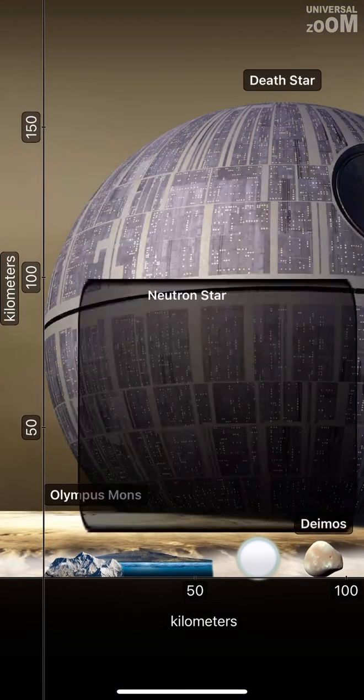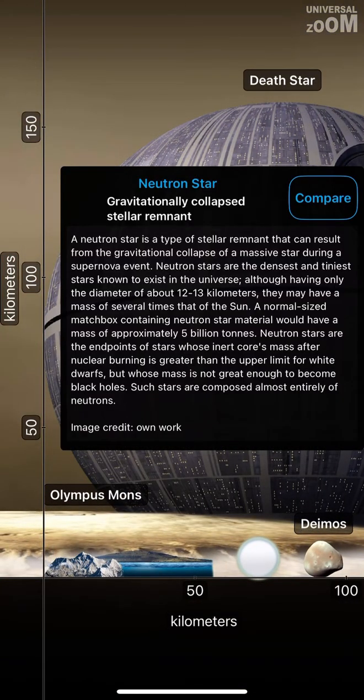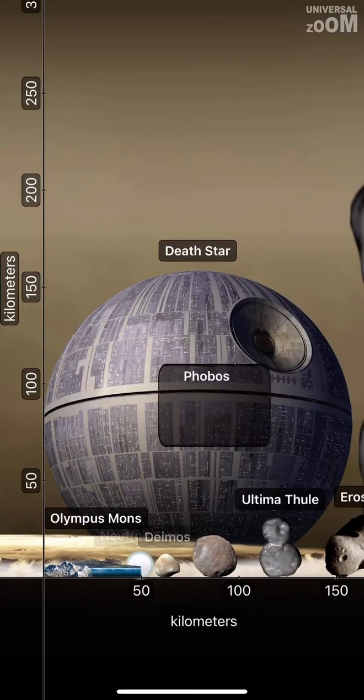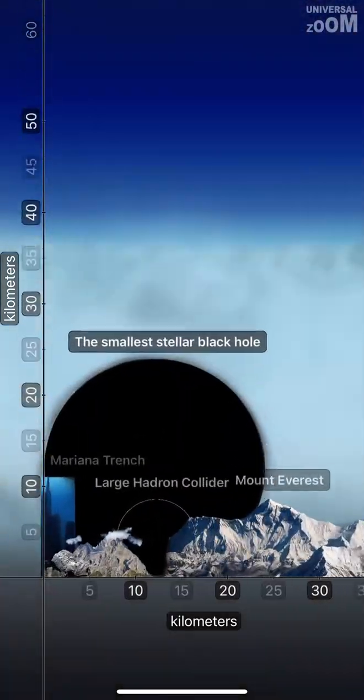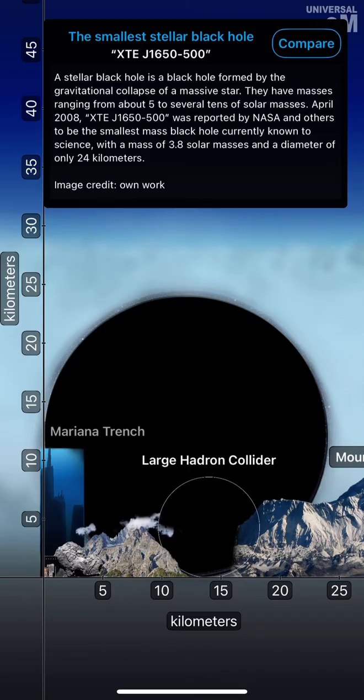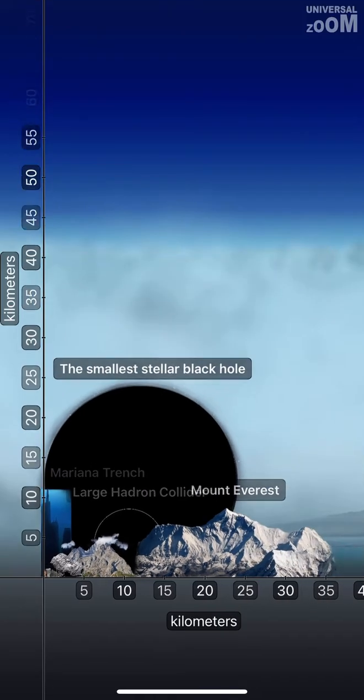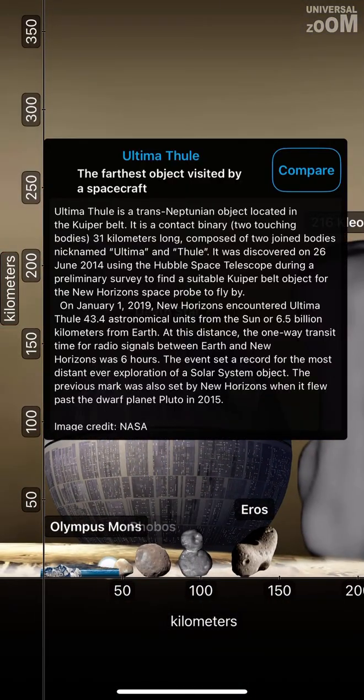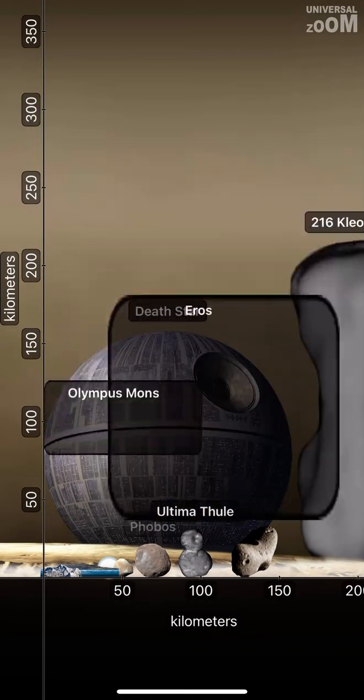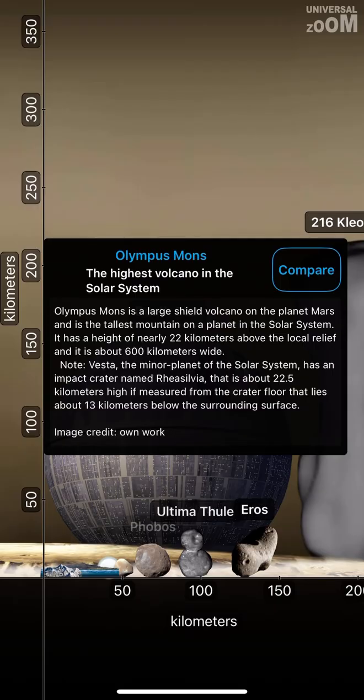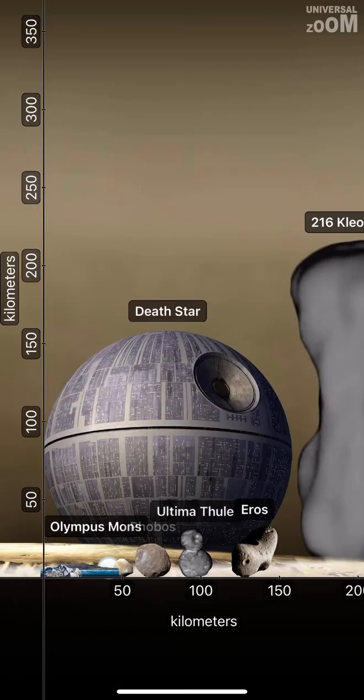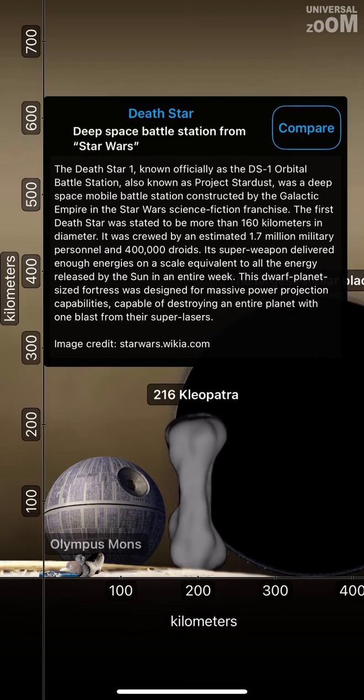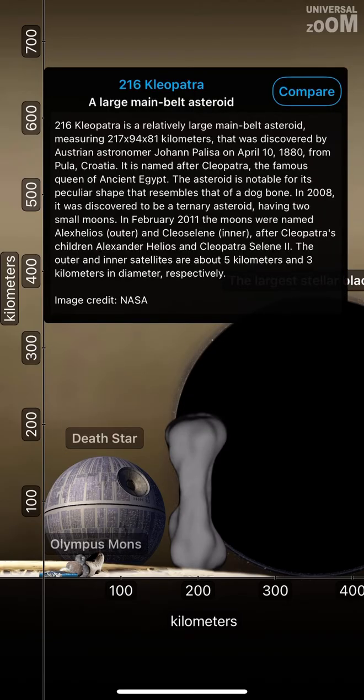Neutron Star, Deimos, Phobos. The smallest stellar black hole, XTE J1650-500. Ultima Thule, Eros. The highest volcano in the solar system. Death Star Deep Space Battle Station from Star Wars.